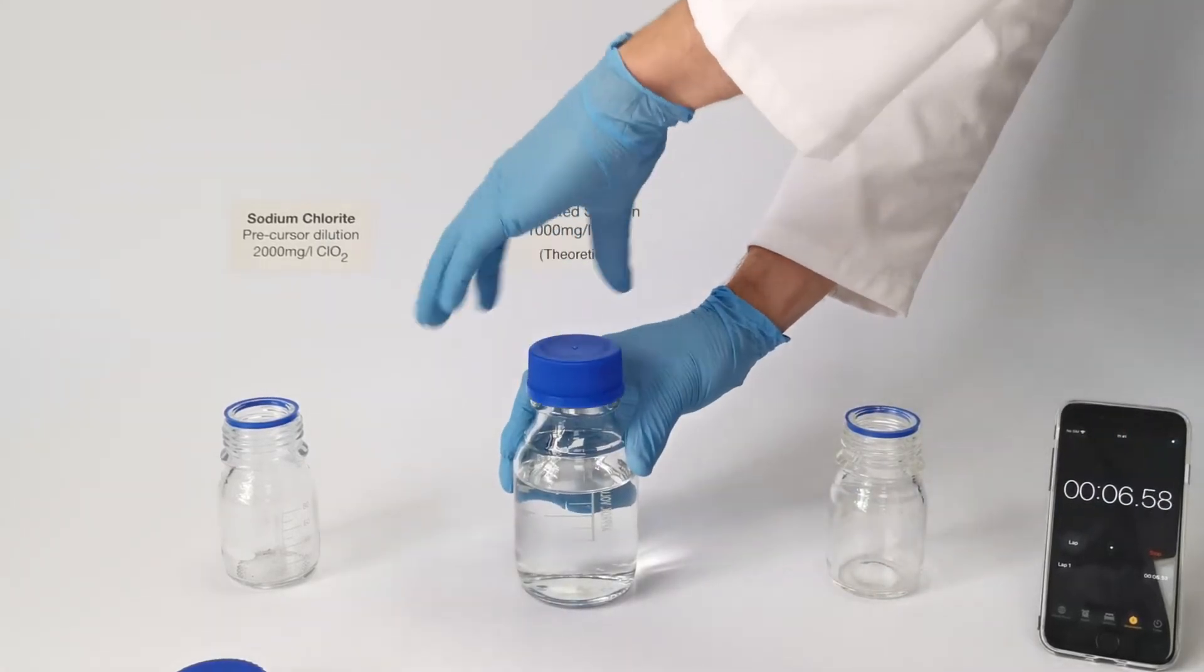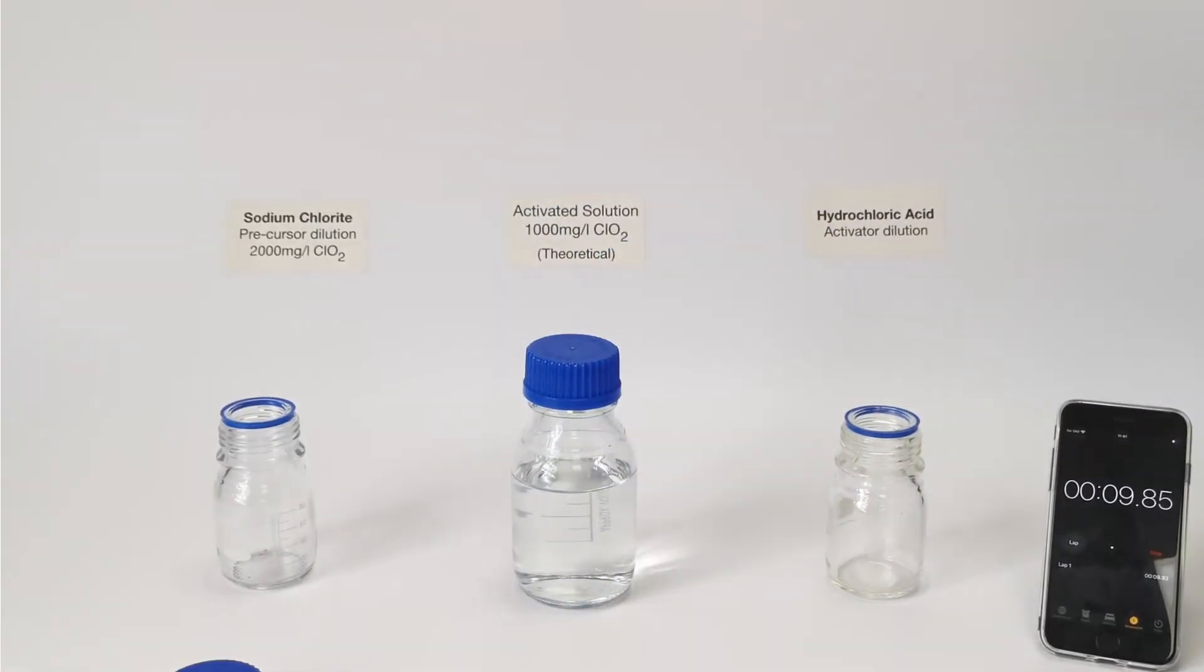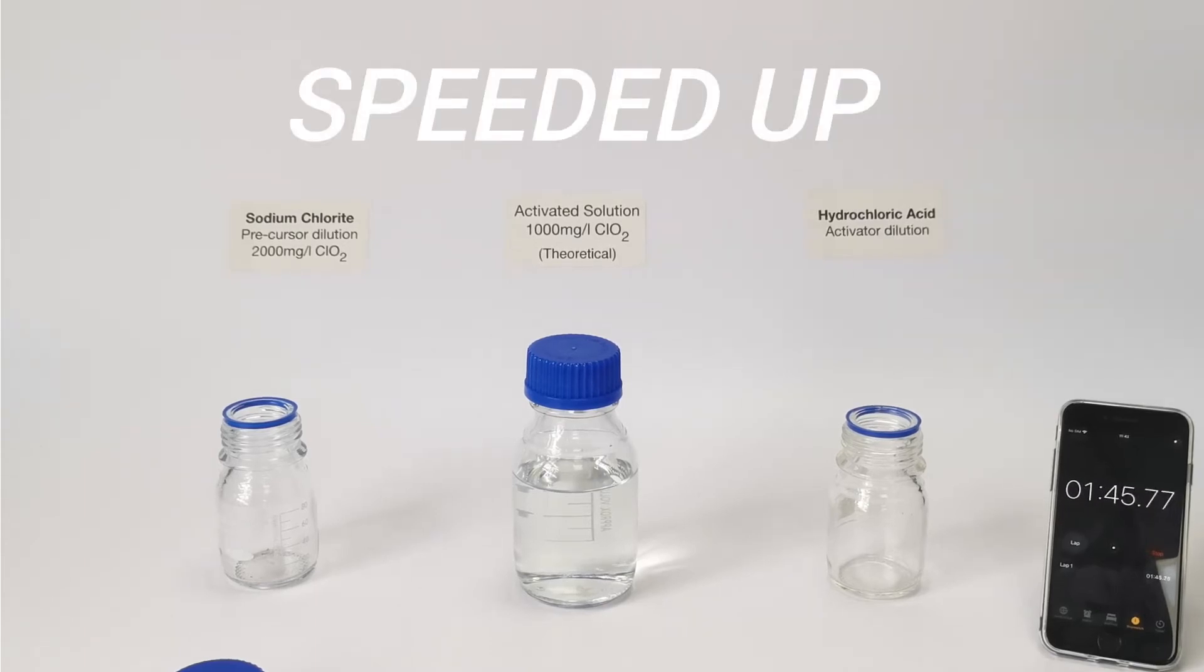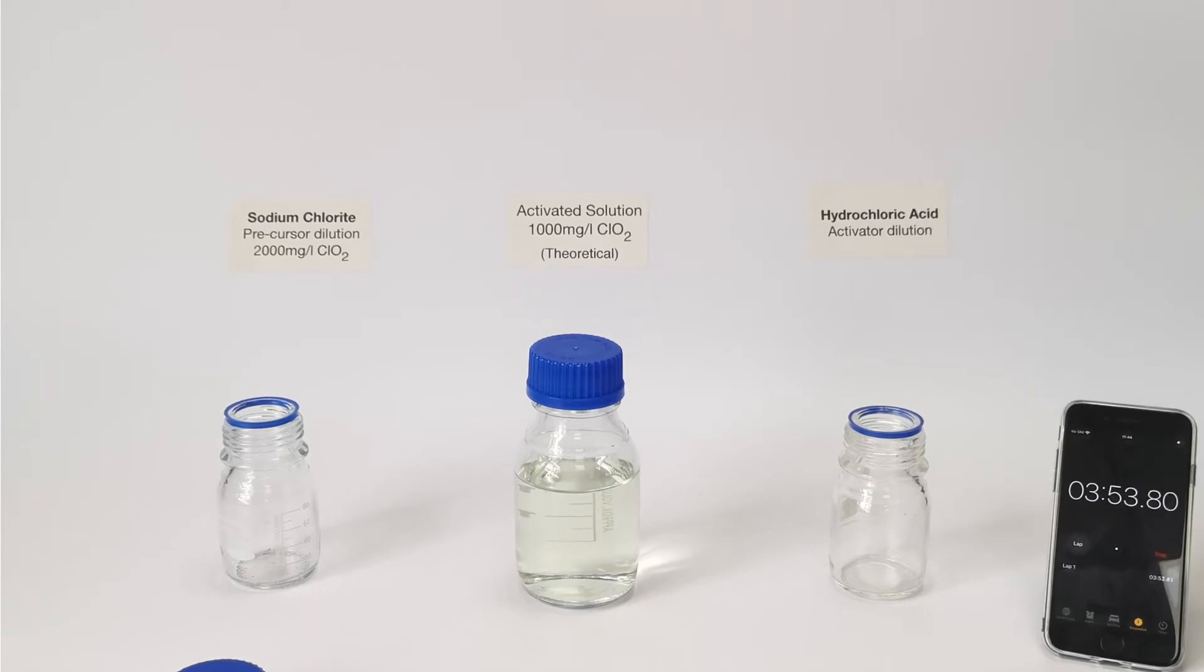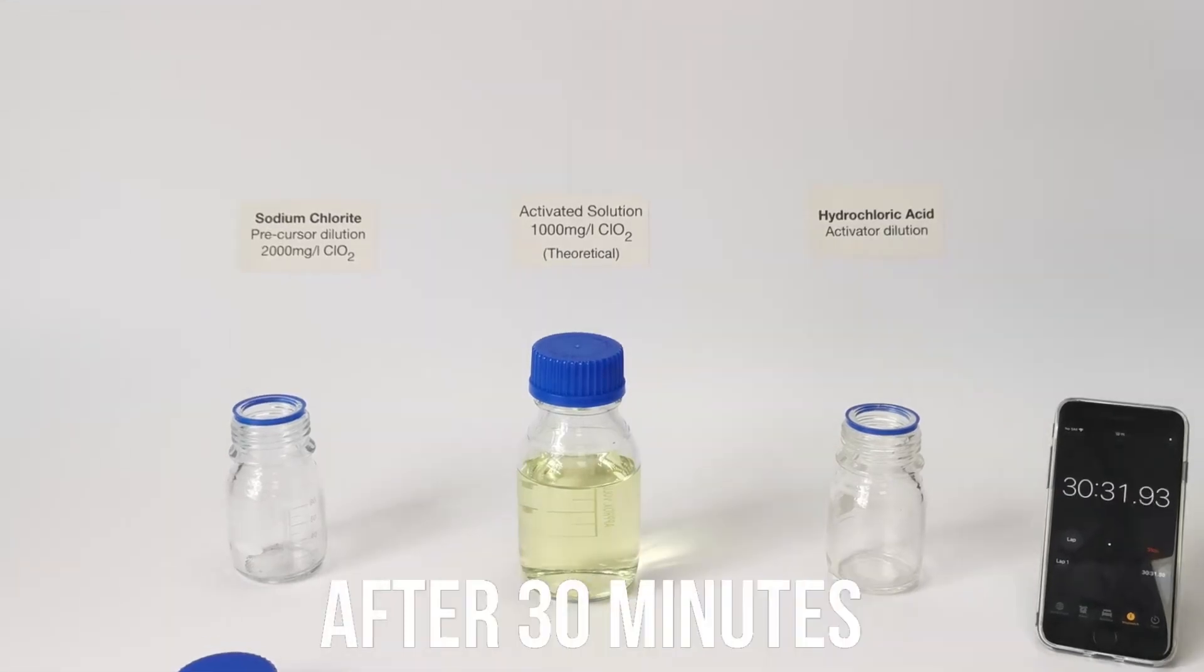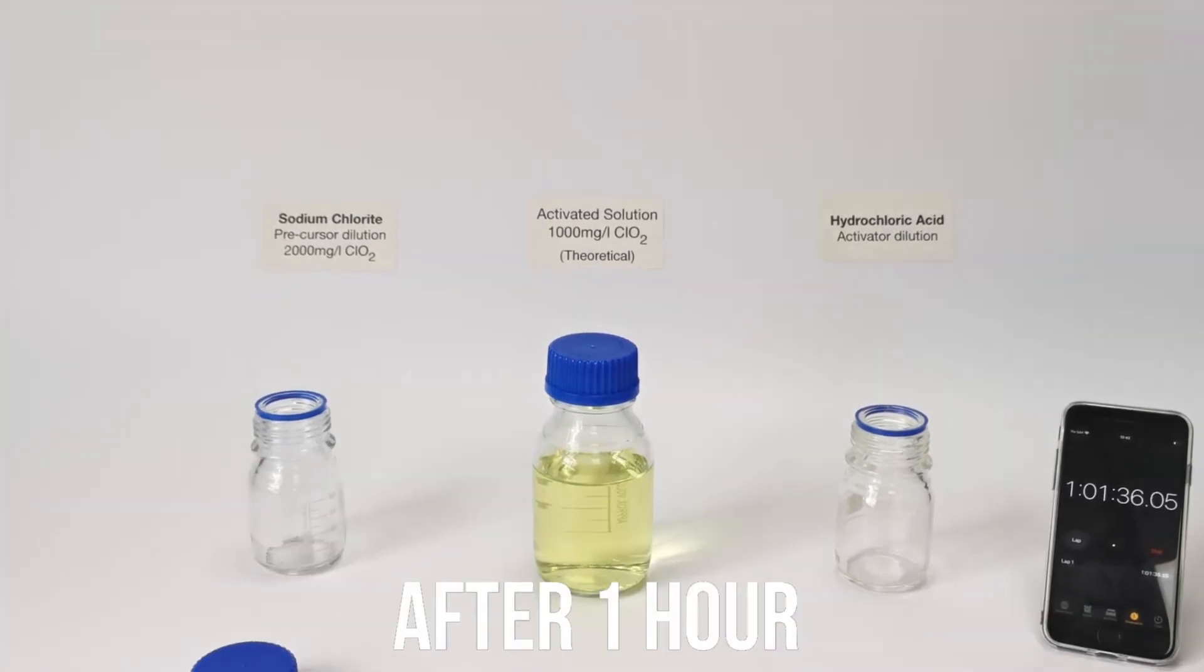A lower conversion also means higher by-products. This slow reaction is the reason a more complicated dosing system is required to treat with conventional chlorine dioxide chemistry. For this reason, Activox is the more cost-effective solution in the long run, as the super-high yield means you get what you pay for.